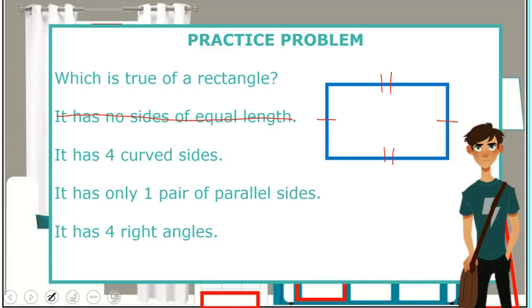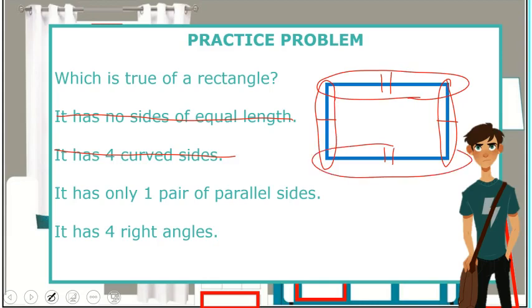The second answer choice says it has four curved sides. I don't see any curved sides. The next answer choice says it has only one pair of parallel sides. Well, that's not true because these two sides are parallel and these two sides are parallel to each other.